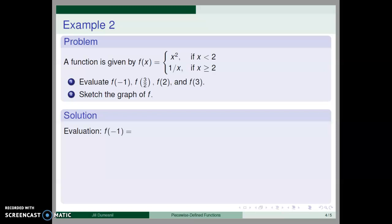To compute f(-1), we use the top rule since -1 is less than 2. So f(-1) is (-1)², which equals 1.